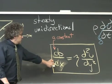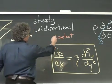So now I need to solve this equation: dp dx is equal to eta times d squared u dy squared.